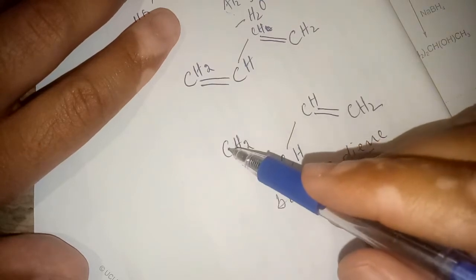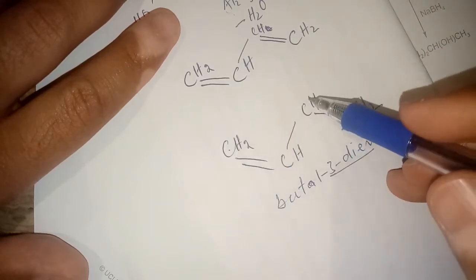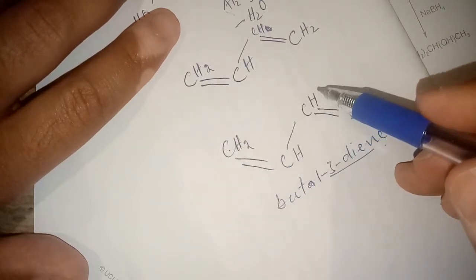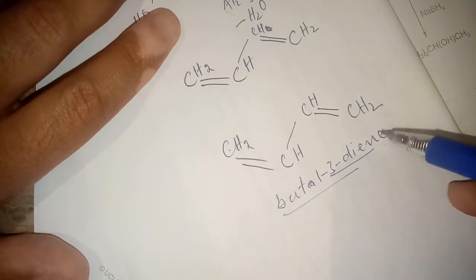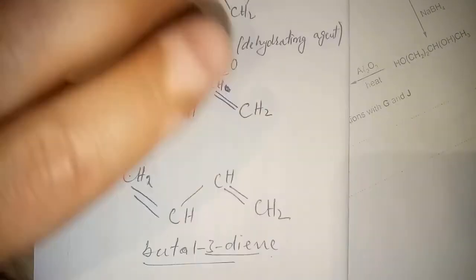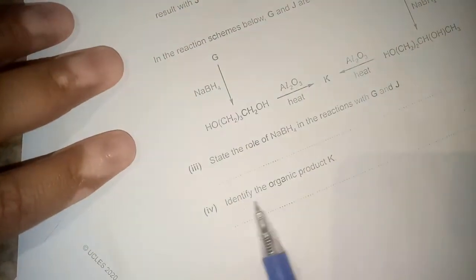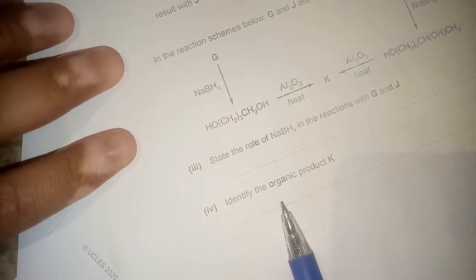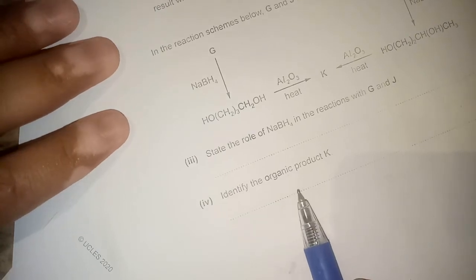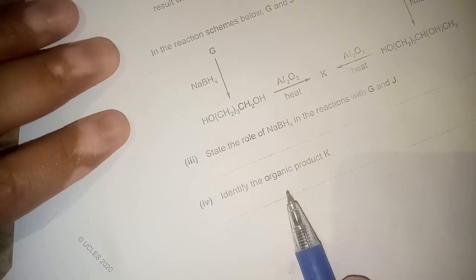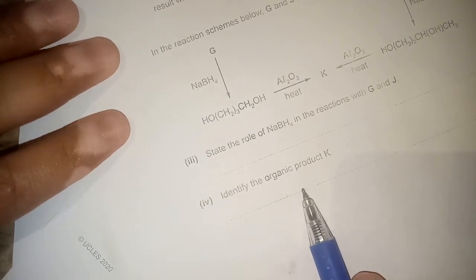The product will be named 1,3-butadiene, or butane-1,3-diene, indicating we have four carbon atoms total and double bonds starting at carbon number one and carbon number three. So the organic product K is but-1,3-diene.